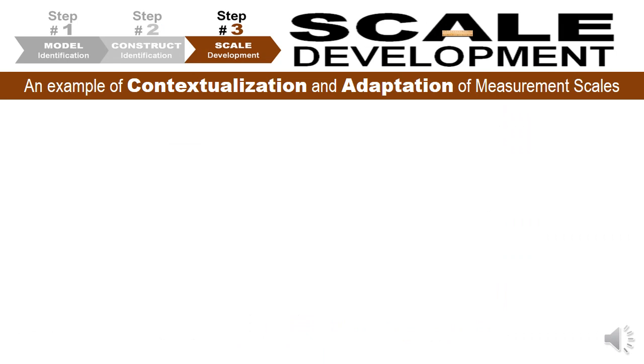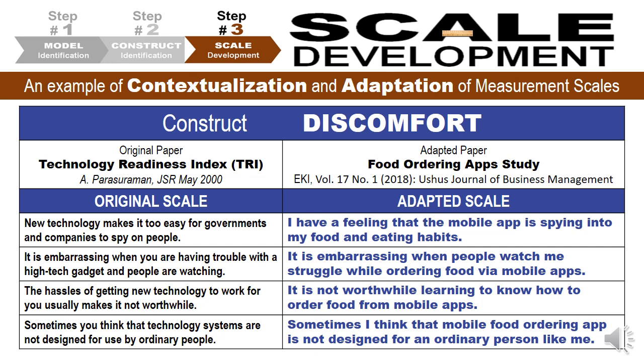Coming to scale development, here is an example of contextualization and adaptation of the Discomfort measurement scale from the Technology Readiness Index paper by Parasuraman (2000), adapted to a study on food ordering apps in India around 2017, when the country was just getting ready for online food ordering. Original scale item: 'New technology makes it too easy for governments and companies to spy on people.' Adapted: 'I have a feeling that the mobile app is spying into my food and eating habits.' Today that is the truth — the market basket analysis of Swiggy is as strong as your own mother's knowledge of what you eat.